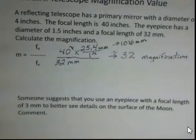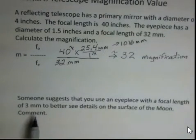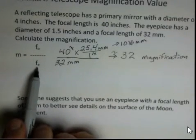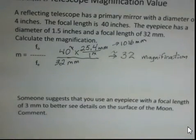Now, someone says, I'd like to see more details, and suggests that you use an eyepiece with a focal length of three millimeters, or even smaller. You can observe here that if the focal length of the eyepiece gets smaller, the magnification value gets bigger. So we could do that.